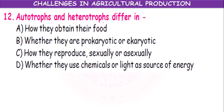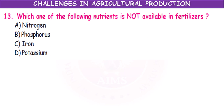Autotrophs and heterotrophs differ in how they obtain their food. Autotrophs synthesize their own food, whereas heterotrophs depend upon other organisms for food — so the distinguishing criterion is how they obtain food. Which one of the following nutrients is not available in fertilizers? Nitrogen, phosphorus, iron, or potassium? Iron is not obtained from fertilizers.